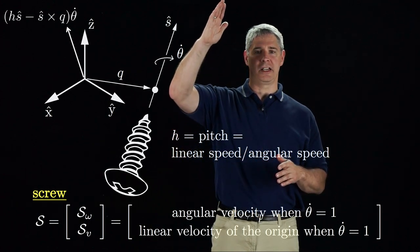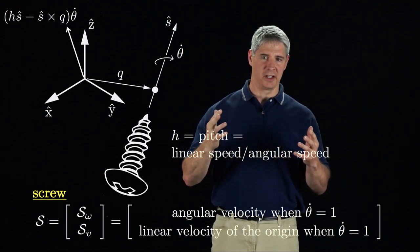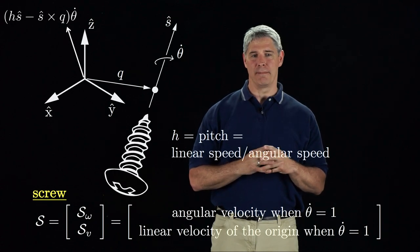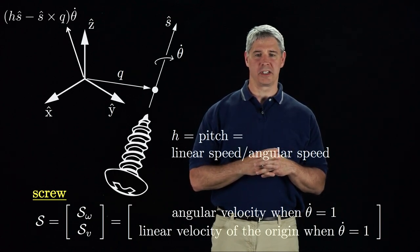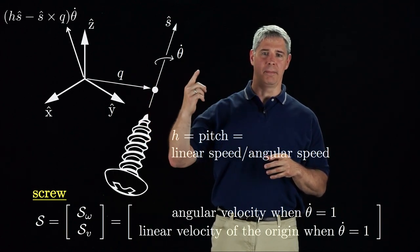which is the linear velocity due to translation along the screw axis if there is a non-zero pitch, and minus S cross Q, which is the linear velocity due to rotation about the screw axis.